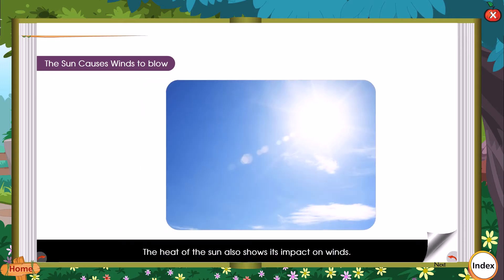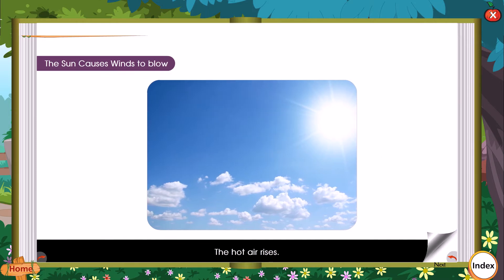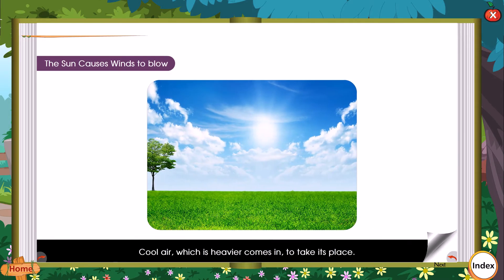The sun causes winds to blow. The heat of the sun also shows its impact on winds. The bright rays of the sun heat up the air. As a result, the air becomes light and the hot air rises. Cool air, which is heavier, comes in to take its place. This movement of air causes winds to blow.